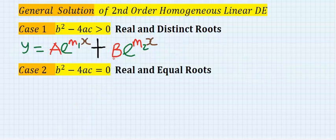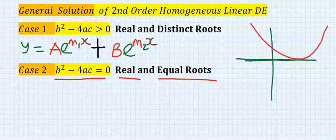Case number two. If b² - 4ac is equal to zero, we say that the root is real and equal root. That is...